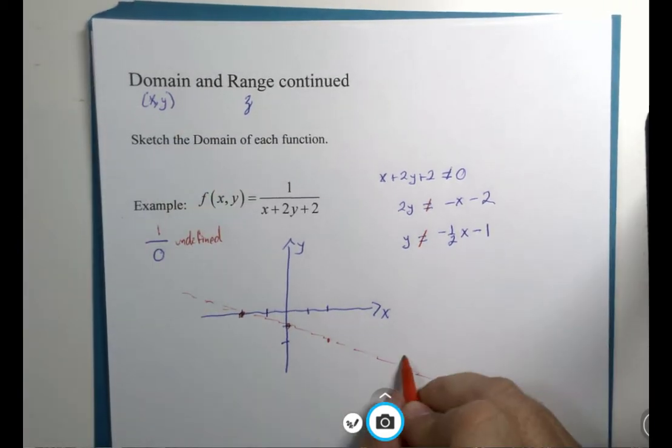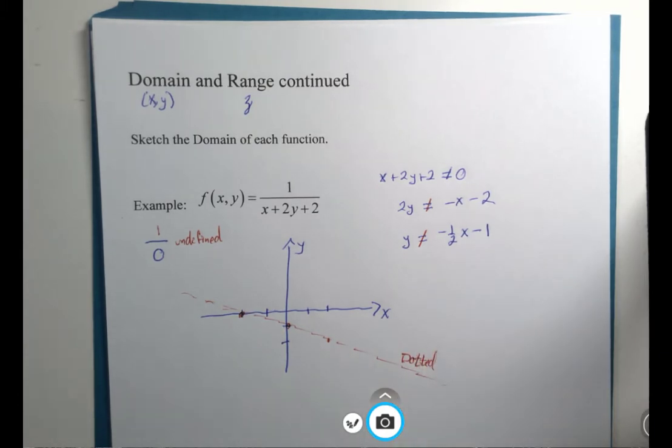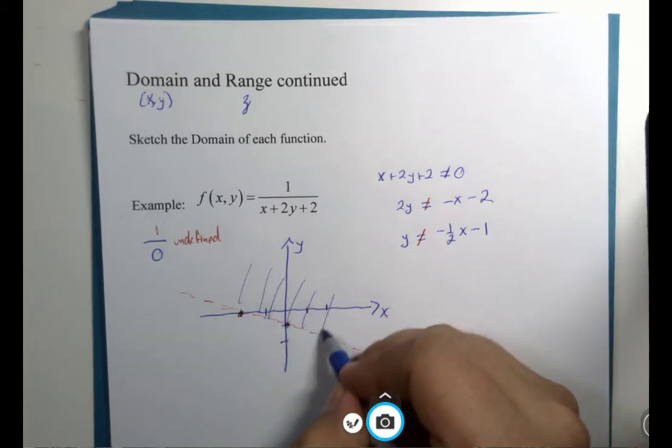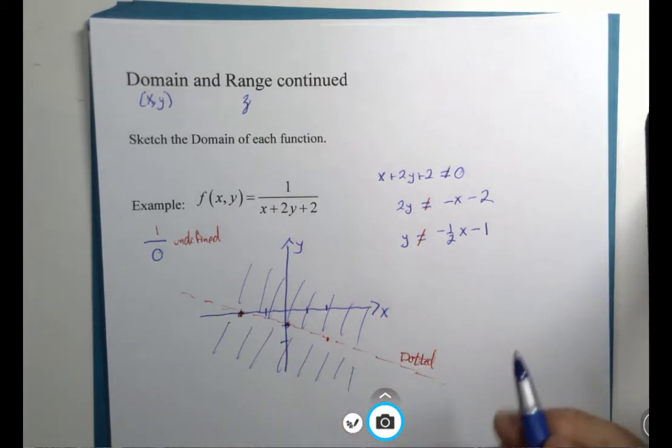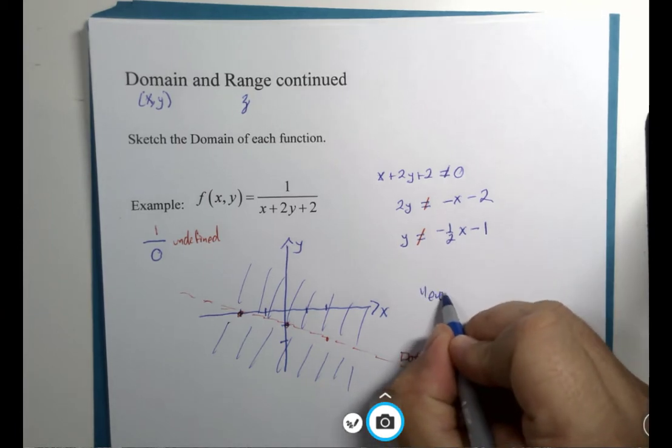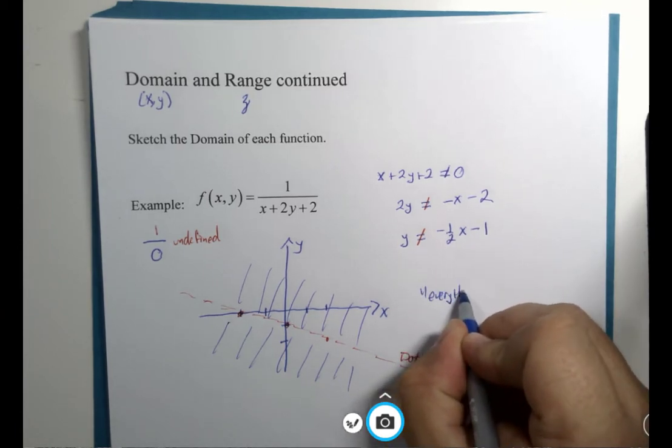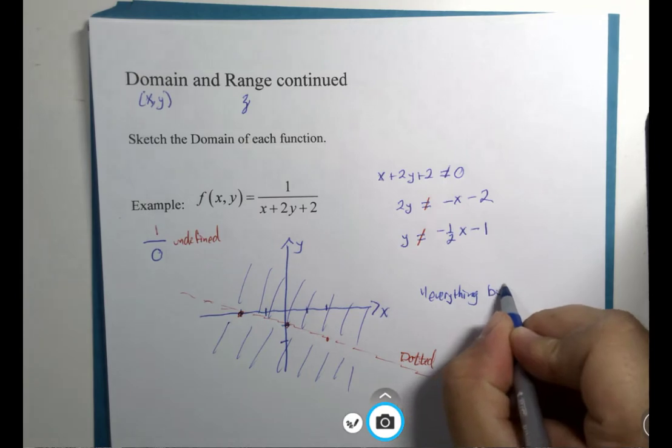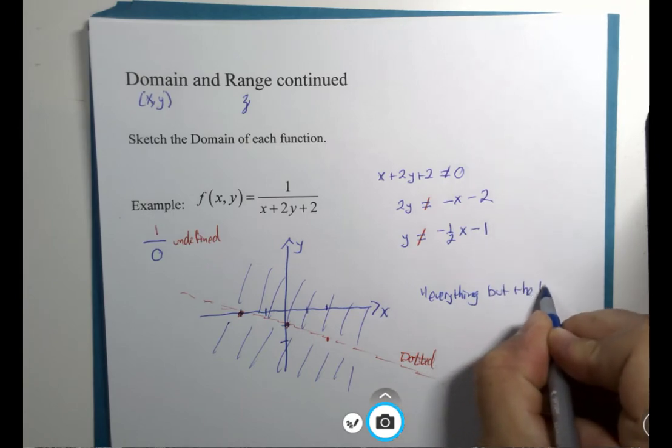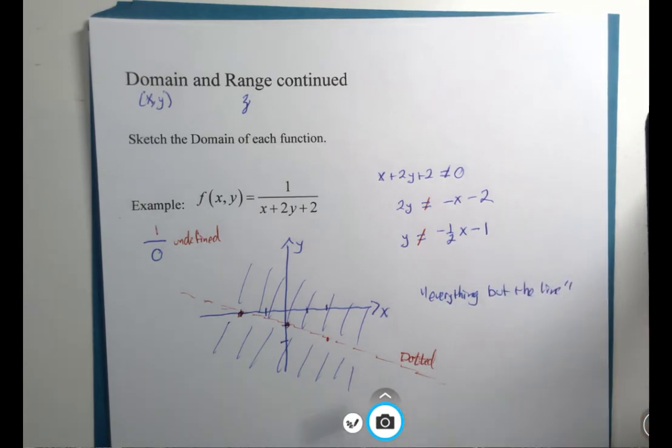This is a dotted line, which means it is not equal to the line. What you can have are points on either side of the line. Everything but the line is really our domain.